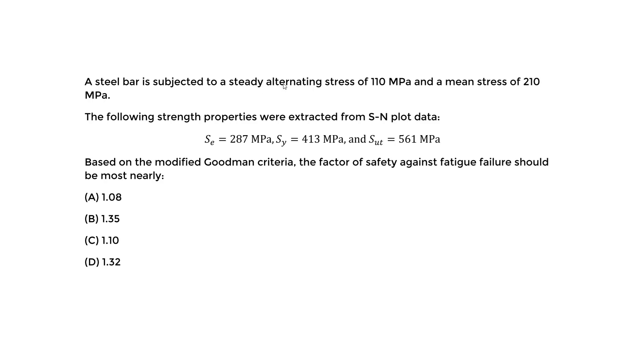This is the maximum, this is the minimum, this is the alternating stress, and this is the mean. Let's go back to the question. We have a steel bar subjected to a steady alternating stress of 110 megapascals and a mean stress of 210 megapascals. The following strength properties were extracted from the S-N plot data. Based on the modified Goodman criteria, the factor of safety against fatigue failure should be what? That's what we want to find.